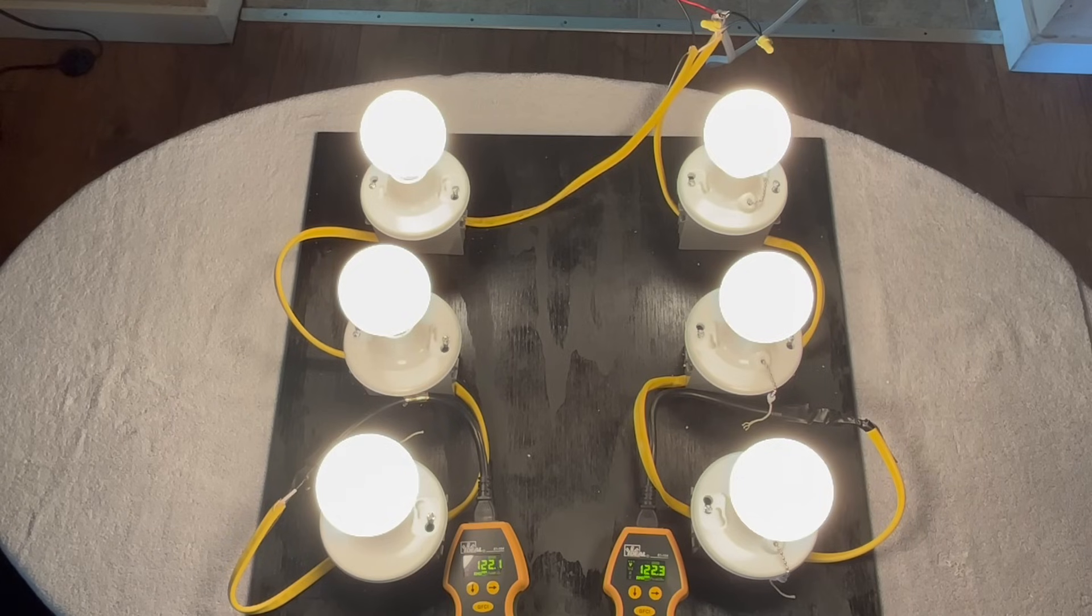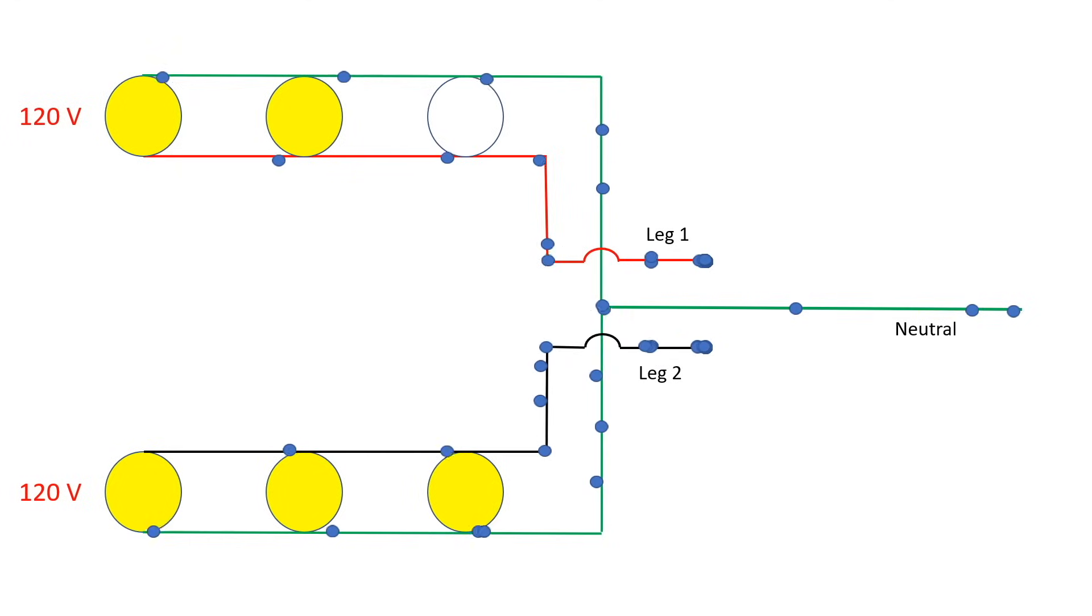As a preview, let's take a quick look at an animation which shows a properly operating electrical system. You can see the current is flowing on leg one, then back to the neutral, and it's also flowing on leg two and back to the neutral.